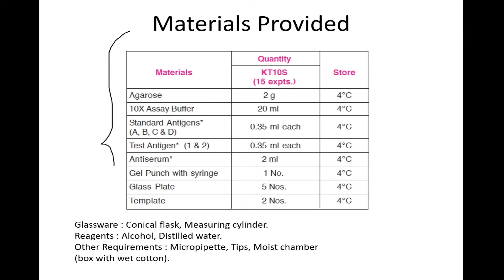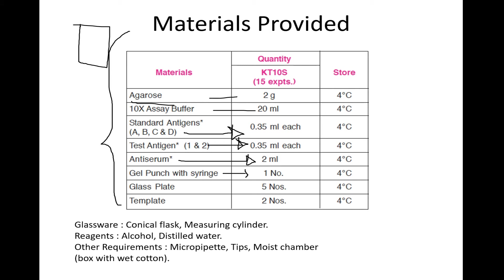The materials required for this experiment include: agarose gel, buffer, antigen samples, standard antigens, antiserum (the most important part), a gel puncher to make wells in the gel, and a glass plate as a template.